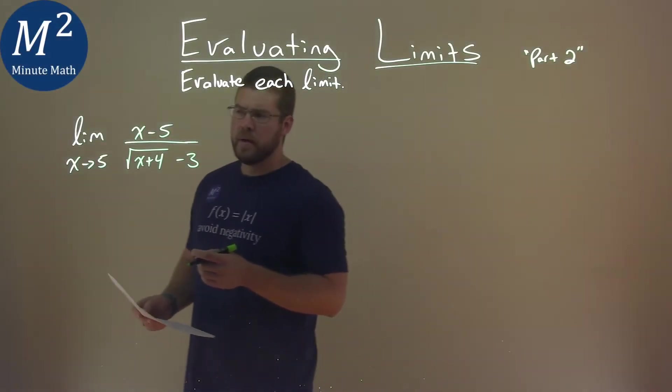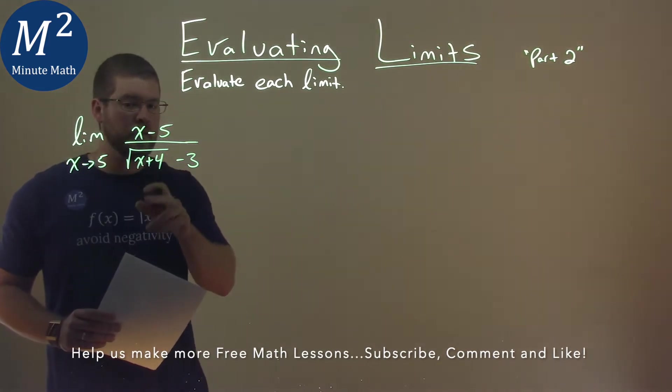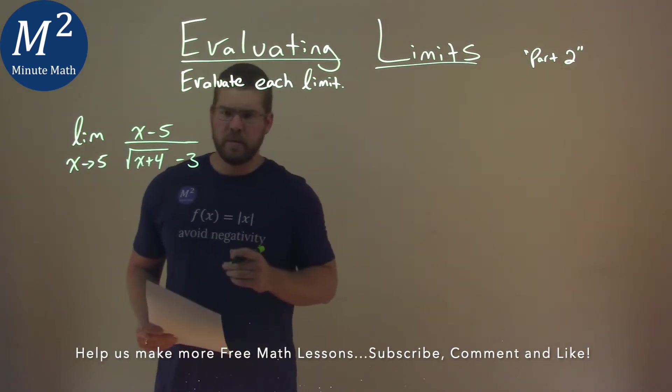We're given this problem right here: the limit as x approaches 5 of x minus 5 over the square root of x plus 4 minus 3 outside the square root. We're evaluating this limit.